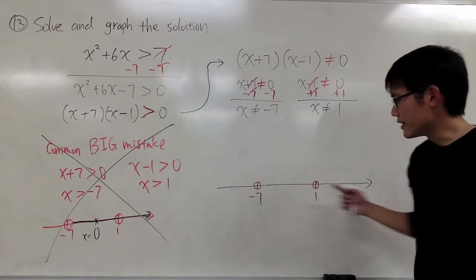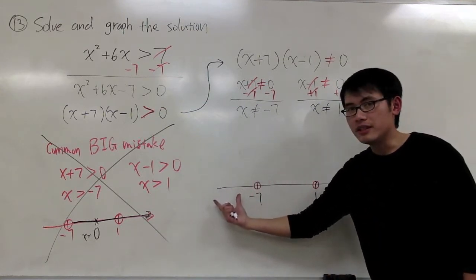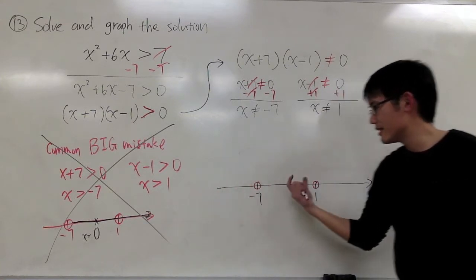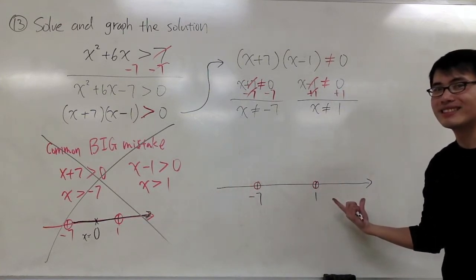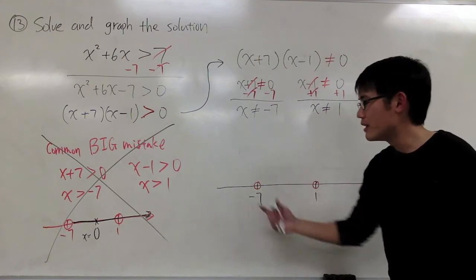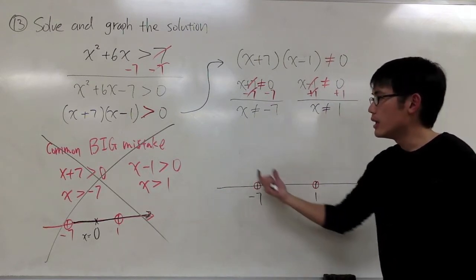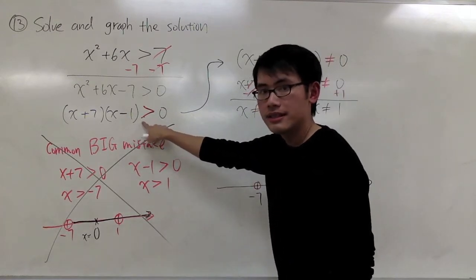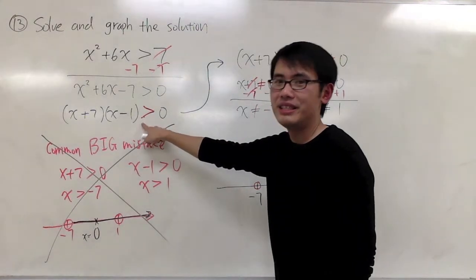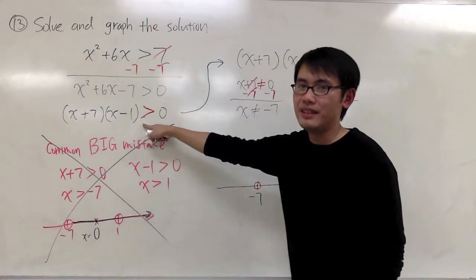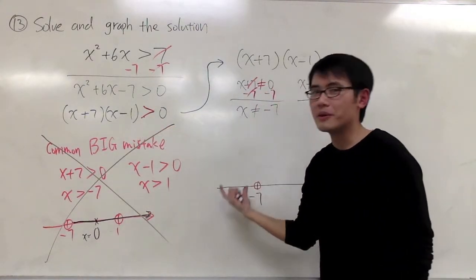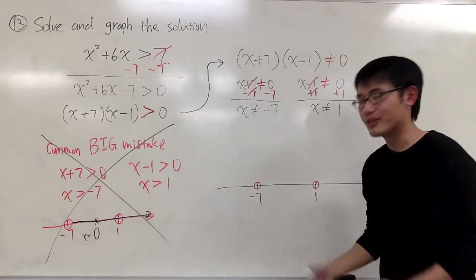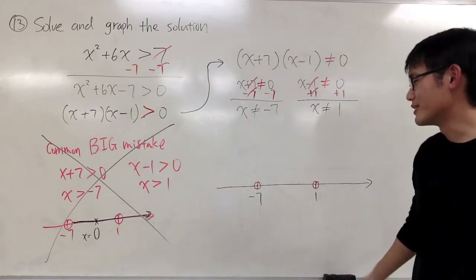Now we have a number line. We have three intervals: the first one, the middle one, and the third one. We are going to pick a number in each interval, plug it into this inequality here to see if it's correct or not. If it is, you will take that interval as your solution set.